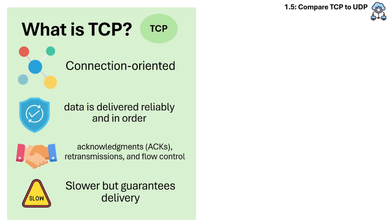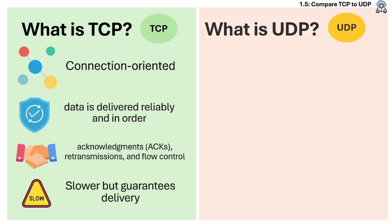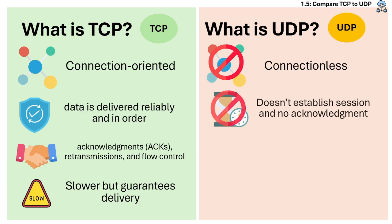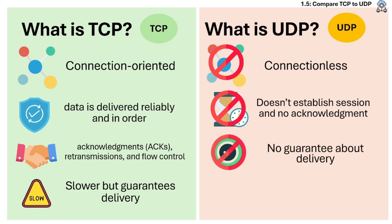Let's now compare it with UDP. UDP is a connectionless protocol. It sends data without establishing a session or checking if it was received. There are no guarantees about delivery or order. But it's faster because it uses fewer resources, and it's ideal for time-sensitive traffic.